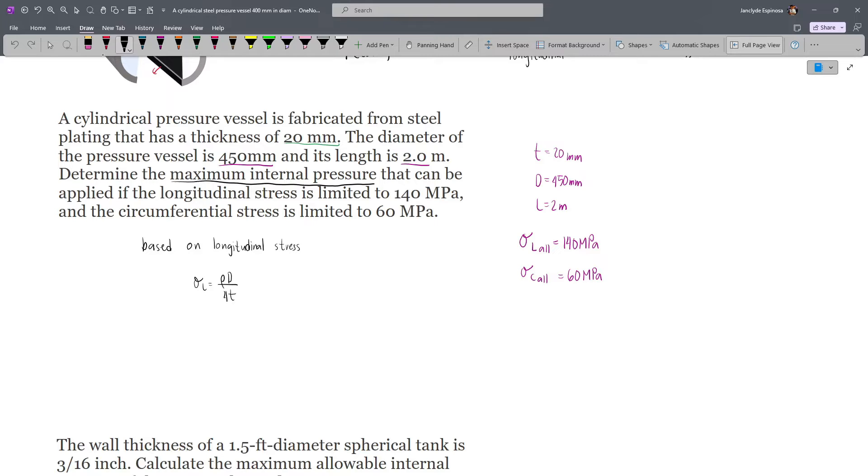Our allowable longitudinal stress is 140 MPa, so this is 140 newton per mm squared, and it's equal to the internal pressure times the diameter which is 450mm divided by 4T, since we are talking about longitudinal, so 4 times 20mm. This will cancel and our resulting unit of P will be newton per mm squared.